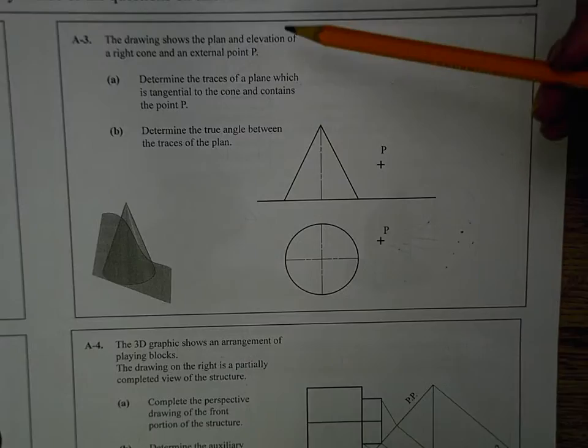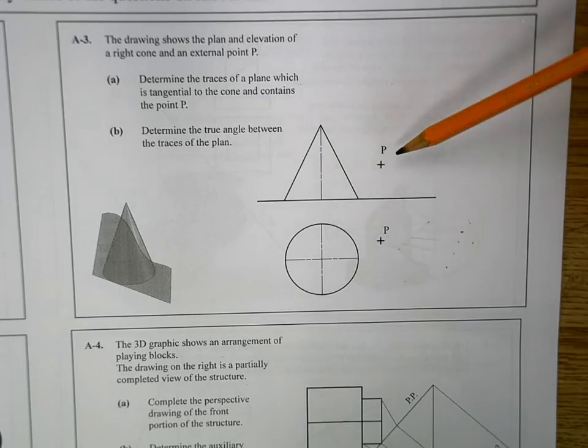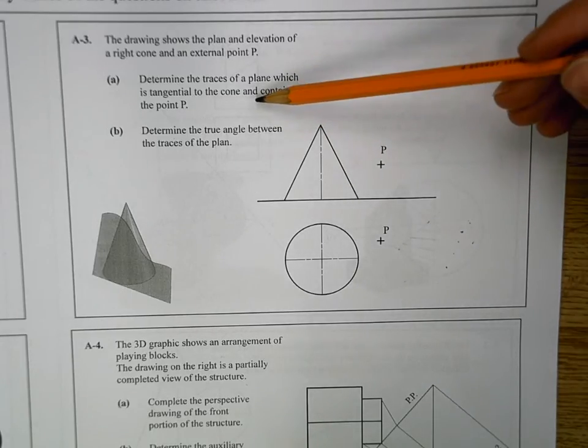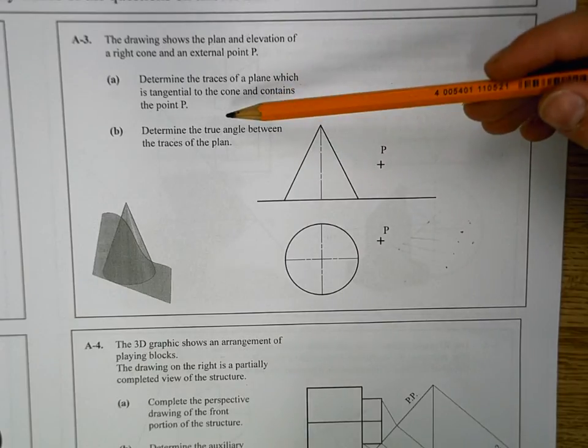Okay, next question we're going to look at is, we're given plan elevation of a cone, and we're also given plan elevation of point P. So the first thing they're asking us is the traces of a plane which is tangential to the cone and contains the point P.